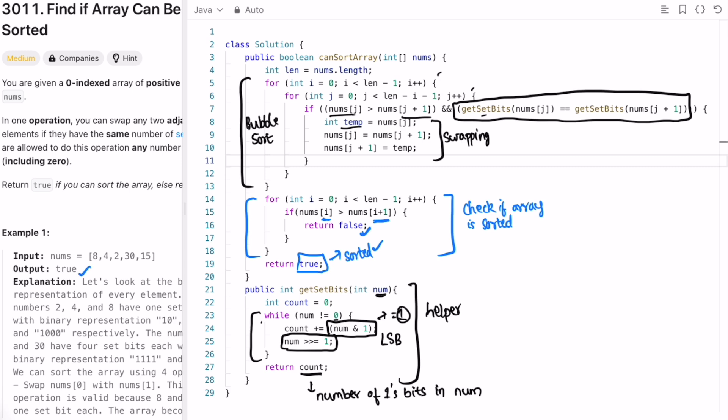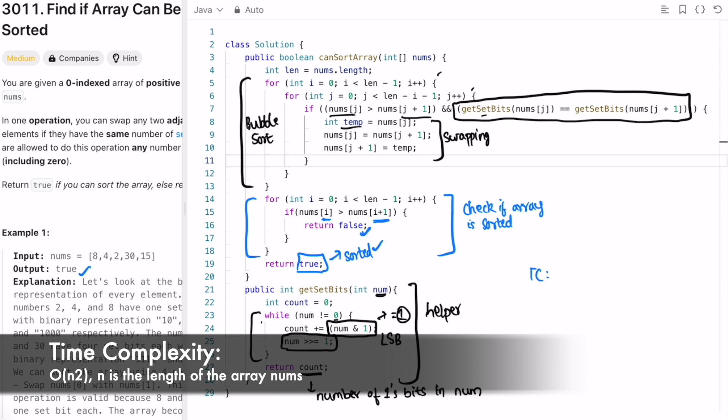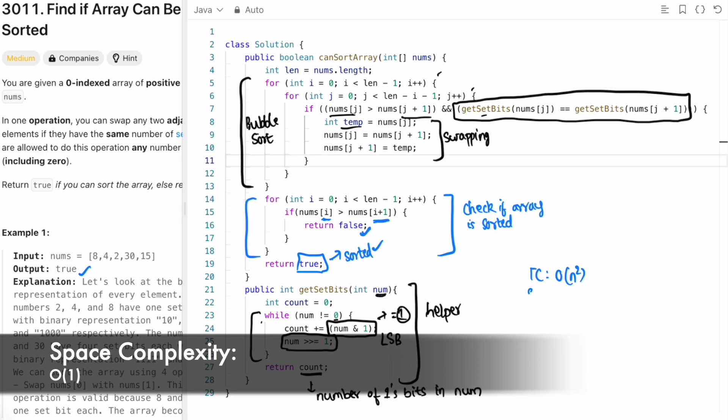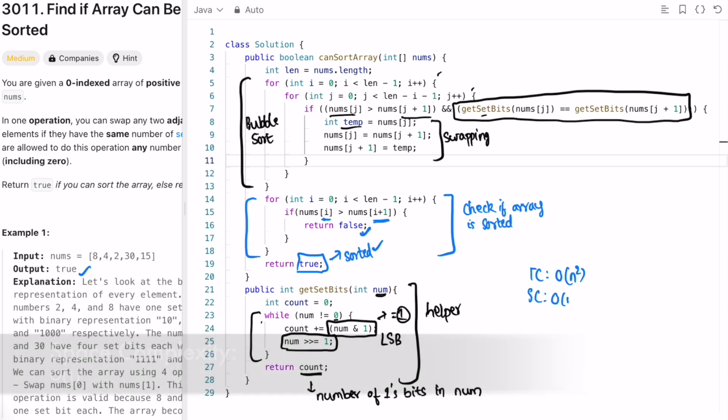Here in this case it will return true. So that is the output. The time complexity of this approach is O of n square because bubble sort uses two for loops, and the space complexity is O of 1 because we are not using any extra space to solve this question. That's it guys. Thank you for watching and I'll see you in the next video.